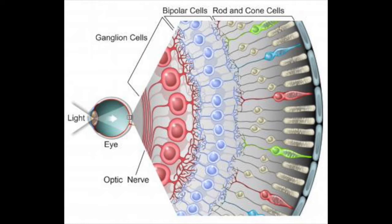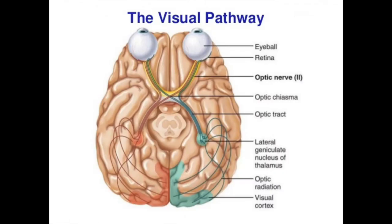Photoreceptor cells are highly vulnerable to damage and immediately begin to degenerate if the retina becomes detached; they are also destroyed by intense light. Rods and cones have different thresholds for activation. Rods are very sensitive, making them best suited for night vision and peripheral vision, while cones need bright light for activation but react much more rapidly. As vision signals leave the eye, they follow the visual pathway starting at the optic nerves. At the X-shaped optic chiasma, fibers from the medial aspect of each eye cross over to the opposite side and continue via the optic tracts. Each optic tract contains fibers from the lateral aspect of the eye on the same side and fibers from the medial aspect of the opposite eye, carrying all information from the same half of the visual field.